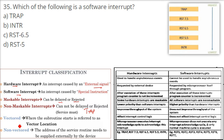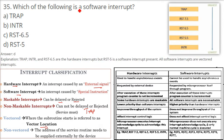Vector and non-vector: vector means where the subroutine starts — the location. If the location is known, we call it a vector. If we don't know the location and the address of the service routine needs to be supplied by the device, then we call it non-vector.